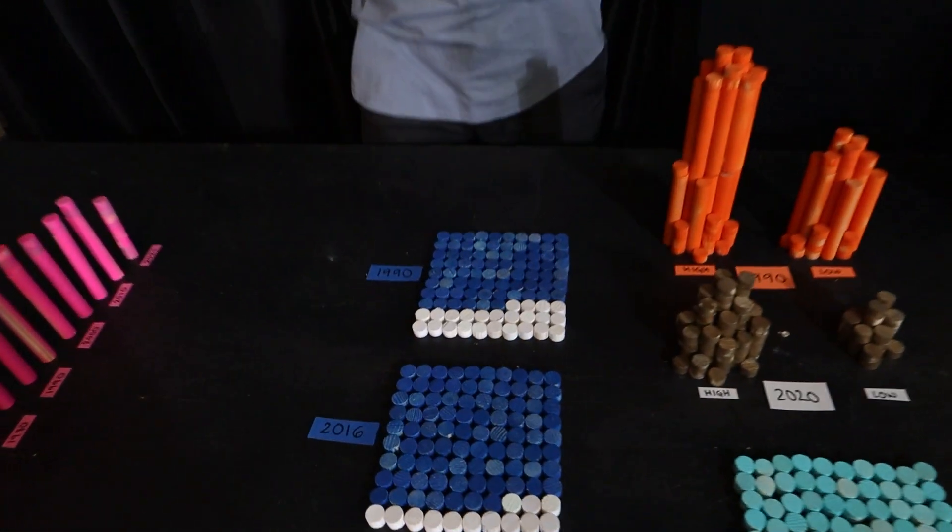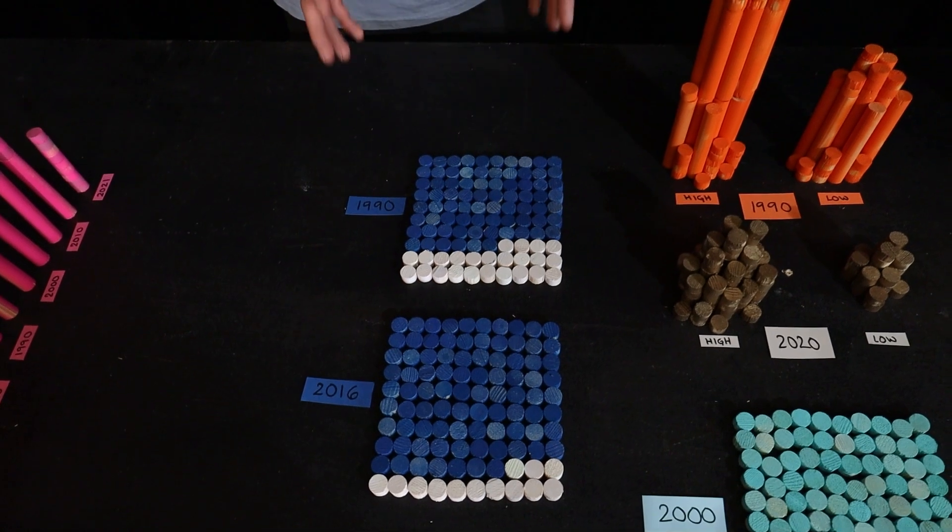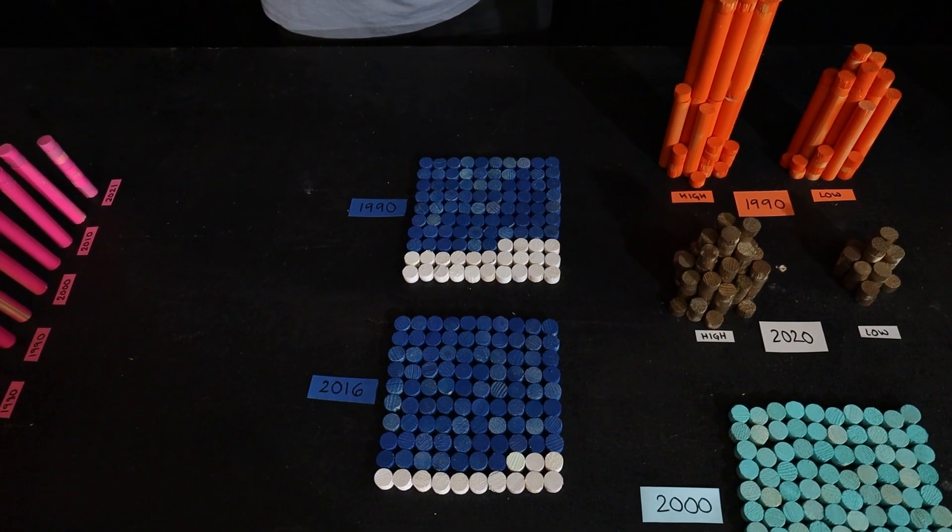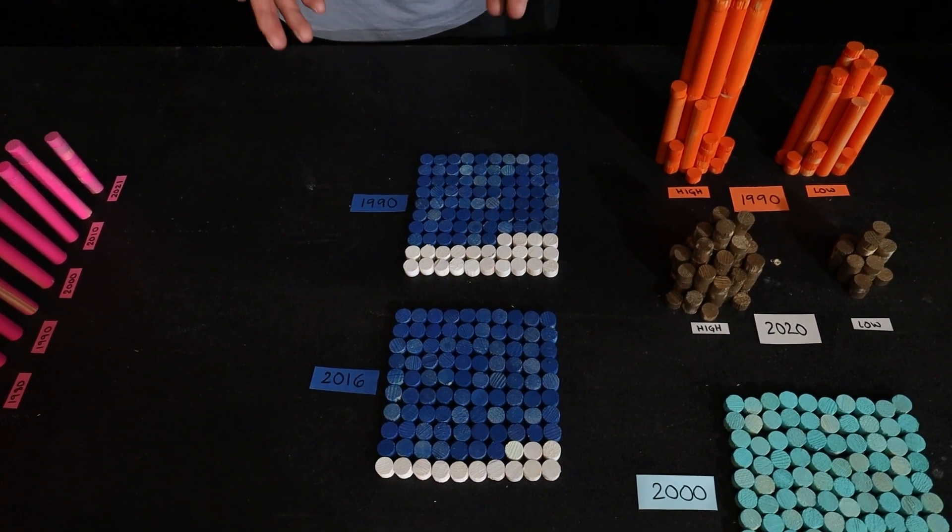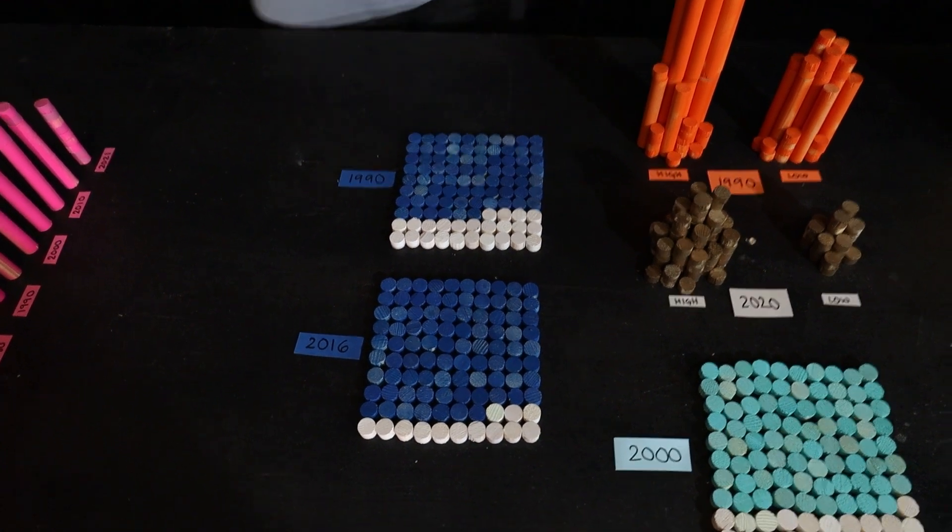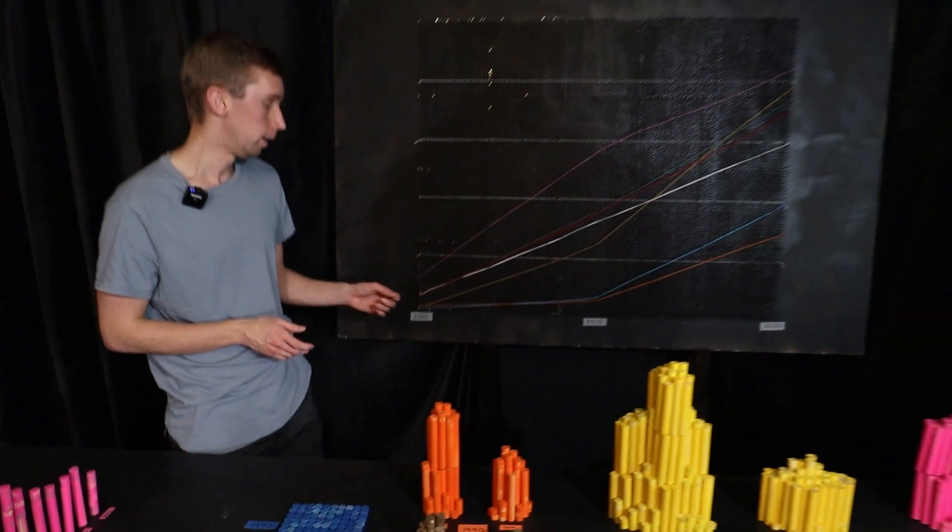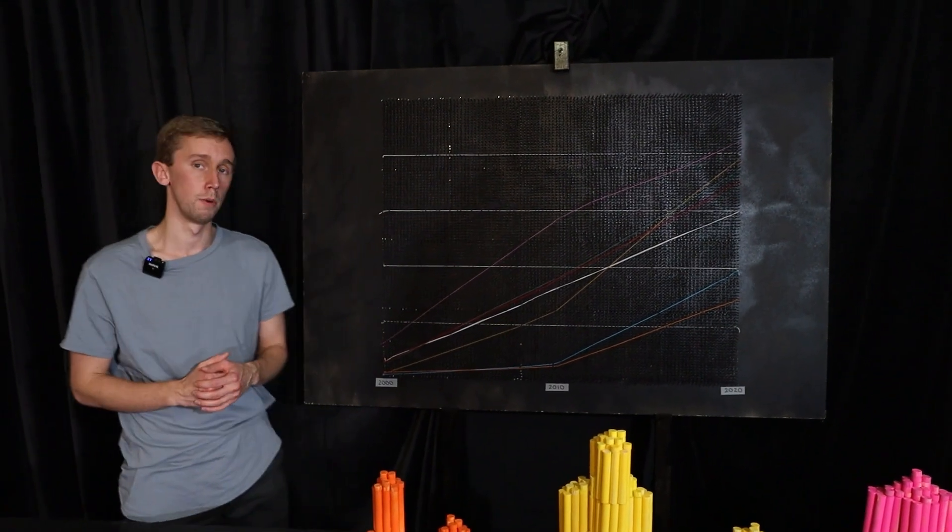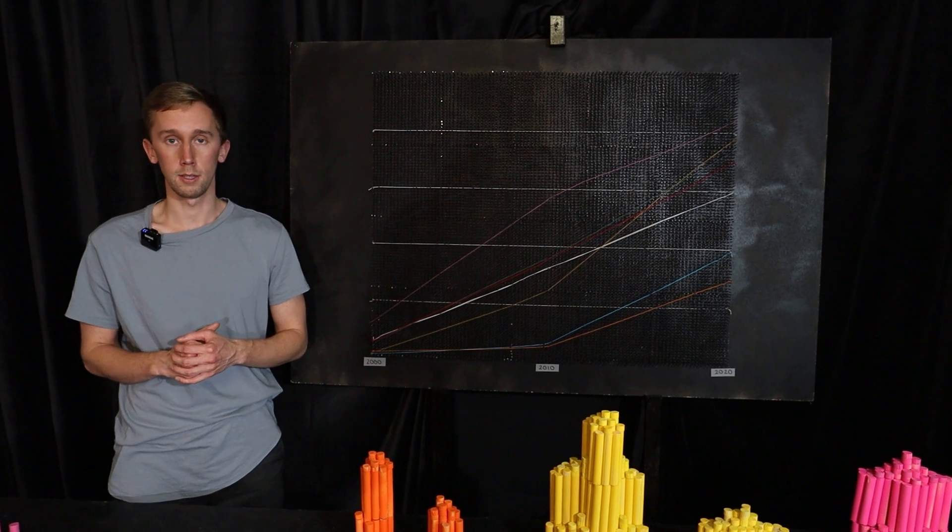The world is also more literate than ever. In 1990, 24% of the world's population were illiterate. In 2016, that number was down to 13%. And we are also more connected than ever before. In the year 2000, only 6% of the world's population, here marked in white, had access to the internet.